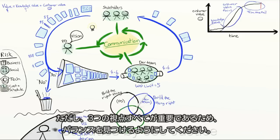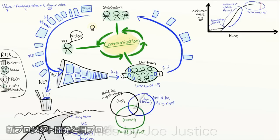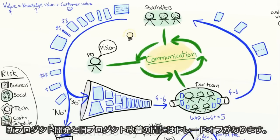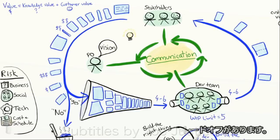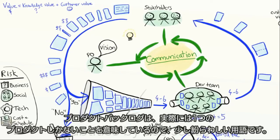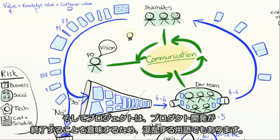However, all three perspectives are important, so keep trying to find the balance. Finally, there is a trade-off between new product development and old product improvement. Product backlog is actually a slightly confusing term because it implies that there is only one product. And project is a confusing term too because it implies that product development ends.